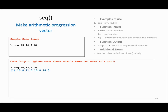Now let's use the seq function in R. The seq function basically generates a sequence of elements. In this example I am calling seq using three parameters: the first one is the starting value, the second one is the ending value, and the third value shows the difference between values. So when I call seq(10, 15, 1.5) it will generate a sequence of numbers starting from 10 to 15 with a difference of 1.5. So the output is 10, 11.5, 13, and 14.5.